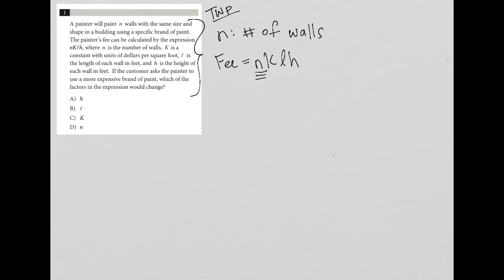K is a constant with units of dollars per square foot, so K has to do with money — the cost or price. L is the length of each wall in feet, so that's one of the dimensions of the wall. And H is the height of each wall. So we have the number of walls, the length of the wall, the height of the wall, and this constant value that has something to do with the cost.